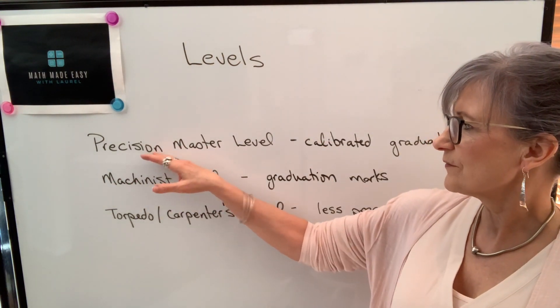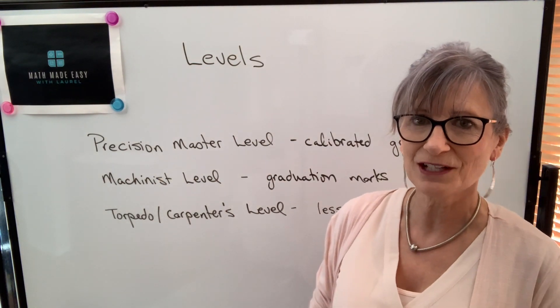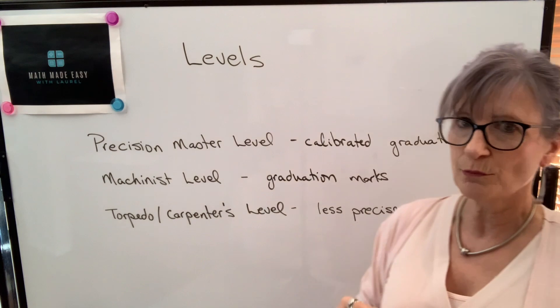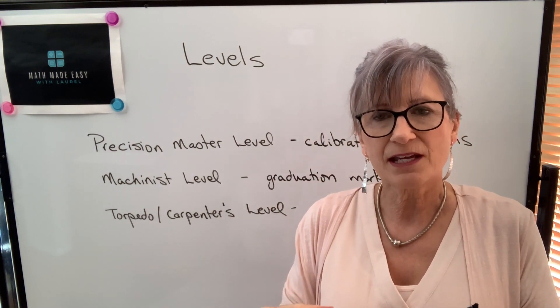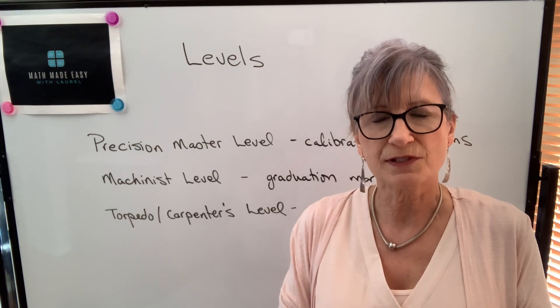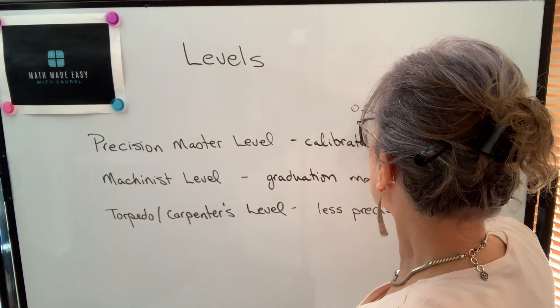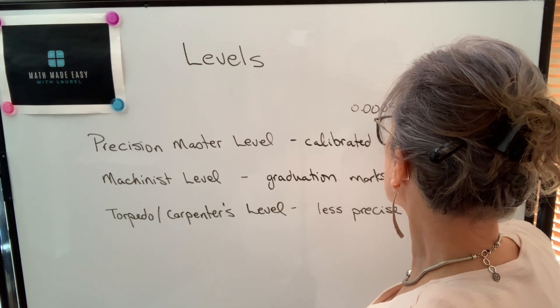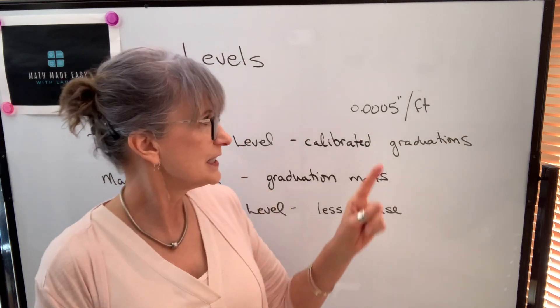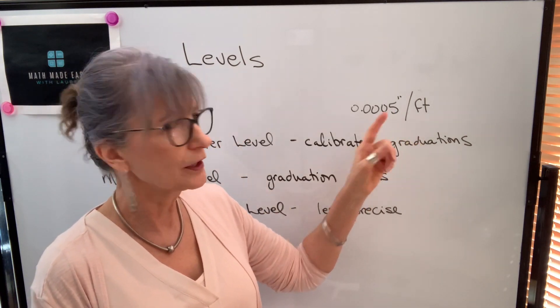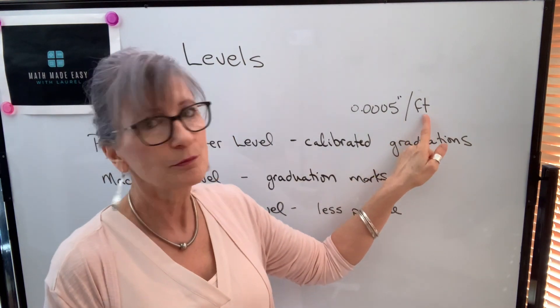So the most precise level is what's called the precision master level. It's also going to be the most expensive level. It's going to have calibrated graduation marks on the vial, and on the level it will say what those graduation marks represent. It might be .0005 inches per foot. What that means is each graduation mark represents that amount of misalignment per foot of length.